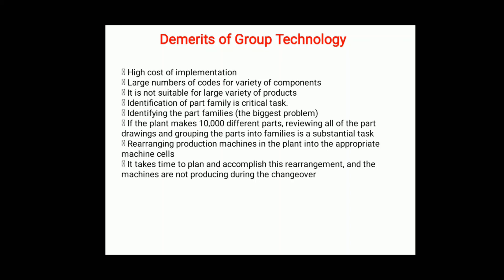A large number of codes are needed for the variety of components when segregating or making various groups, which makes reading and segregating difficult. Group technology is not suitable for a large variety of products; it is simply suitable for mass production.